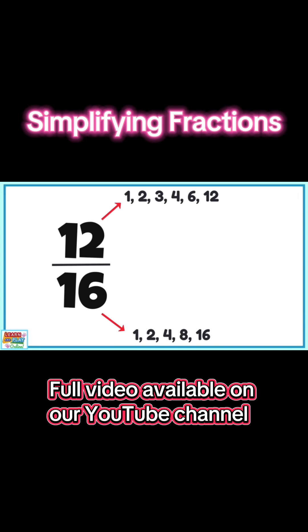we can see that the highest common factor is the number 4. Now that we've identified the highest common factor, we need to divide both the numerator and denominator by 4. 12 divided by 4 is 3 and 16 divided by 4 is 4. So 12 over 16 is simplified to 3 quarters.